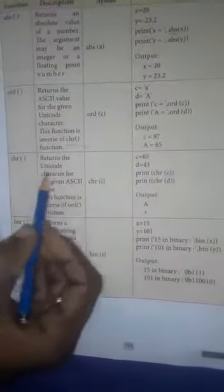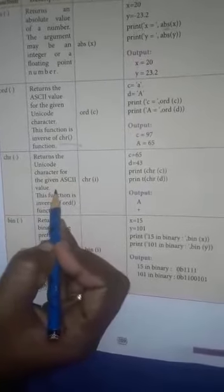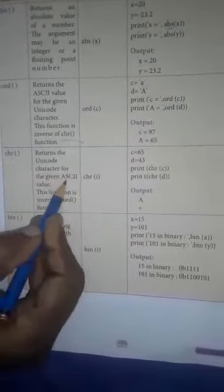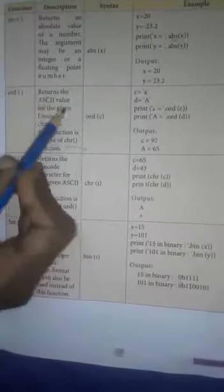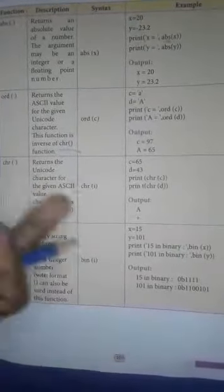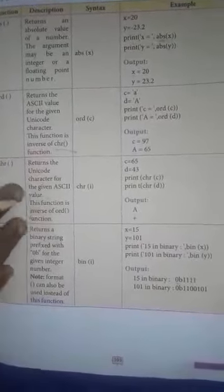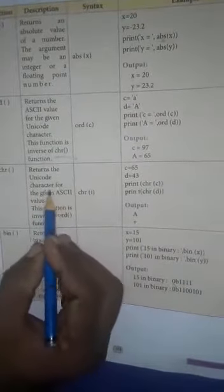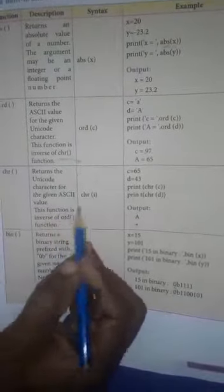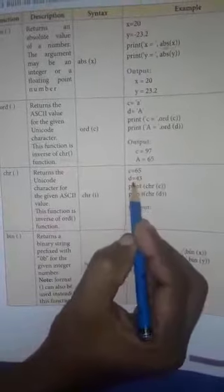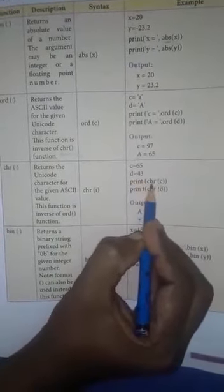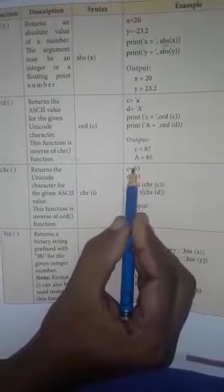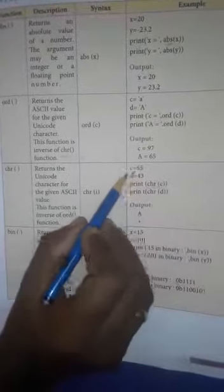Next is the chr() function. It returns the unicode character for the given ASCII value. This is the inverse of the ord() function — ord() and chr() are inverse functions. Syntax: chr(i). Example: c = 65 and d = 43. Print chr(c) and chr(d). The unicode character for 65 is capital 'A', and the unicode character for 43 is '+'.